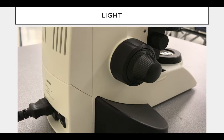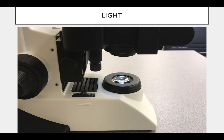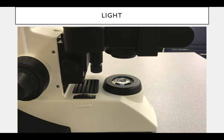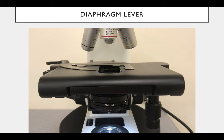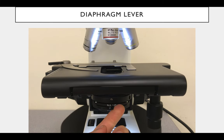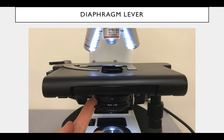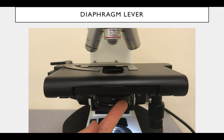Speaking of which, you have a light. You can turn it on in the back, and then you can make it brighter or less bright using the dimmer. You have a diaphragm lever — so if you have the light all the way on and you want to control how much light is getting to your sample, you can use the diaphragm lever to either let more light in, or close it for less light.